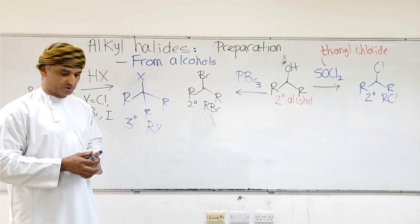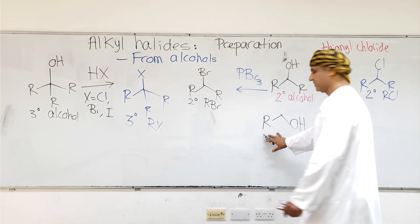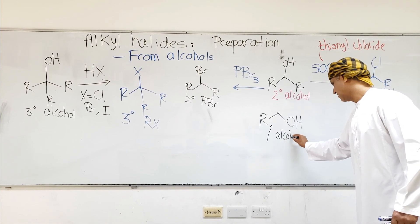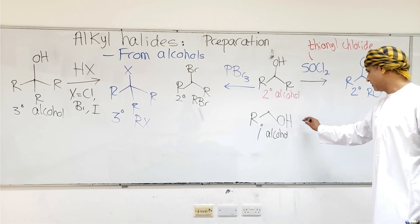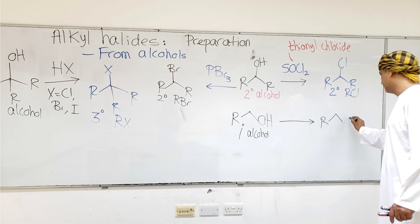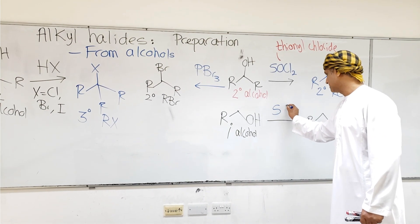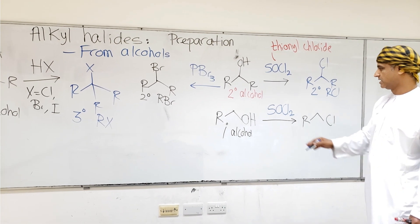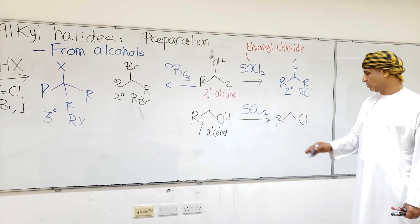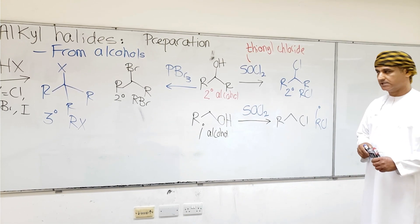Primary alcohols can also be converted into alkyl halides. This is a primary alcohol of this general structure. Primary alcohols can be converted into the corresponding alkyl chloride if the alcohol is treated with thionyl chloride, just like in the case of secondary alcohols.